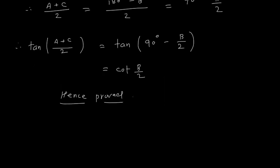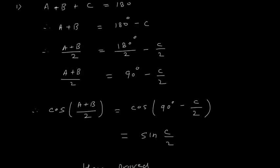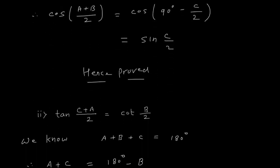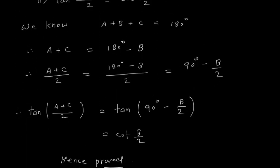This exercise 18.2 is based on only one concept — complementary angles: sinθ = cos(90° − θ), cosθ = sin(90° − θ), tanθ = cot(90° − θ), cotθ = tan(90° − θ), secθ = cosec(90° − θ), and cosecθ = sec(90° − θ). All questions use this concept. Thank you for being with me in this lecture.